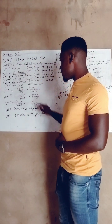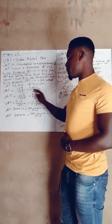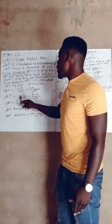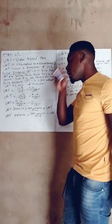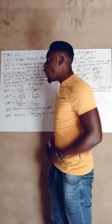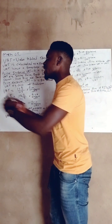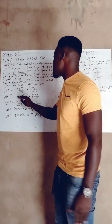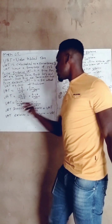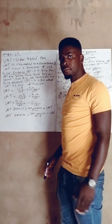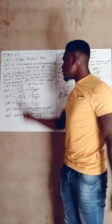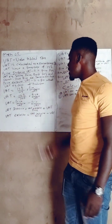When VAT is excluded, we use: VAT = 15% ÷ 100 × price. For example, if a person is going to buy a phone for R1,500 but the VAT is not included, I will say: VAT = 15% ÷ 100 × 1,500. That gives us the VAT amount. The difference is: when VAT is included we divide by 115, and when VAT is excluded we divide by 100.